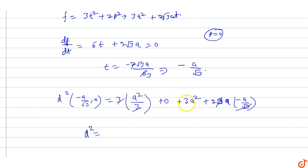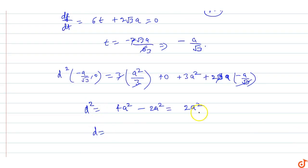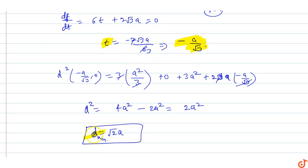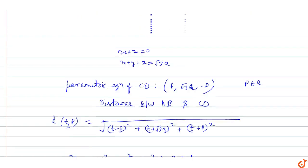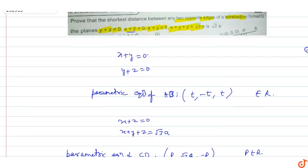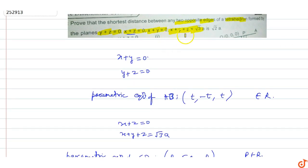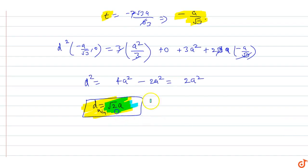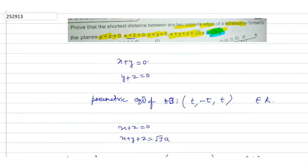This gives d² = 3a² + a² - 2a² = 4a² - 2a² = 2a². Taking the square root, d = √2a. So the shortest distance between the opposite edges of the tetrahedron formed by the planes x+z=0, y+z=0, x+y=0, and x+y+z=√3a is equal to √2a.